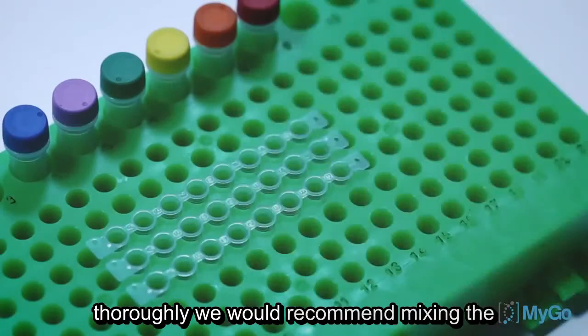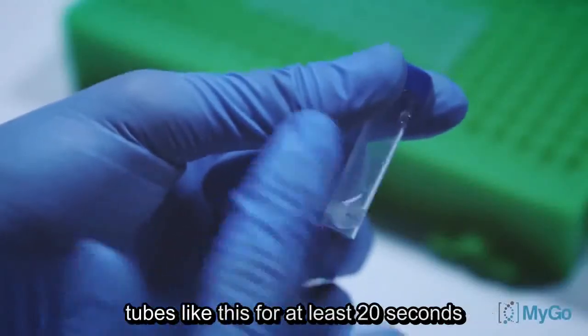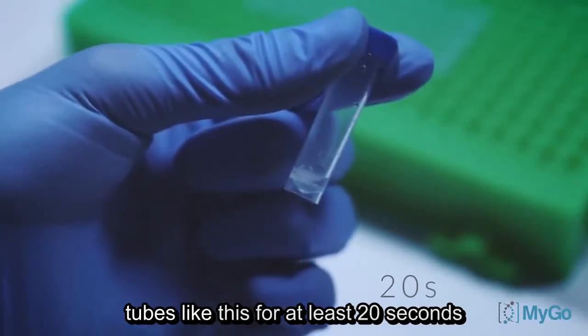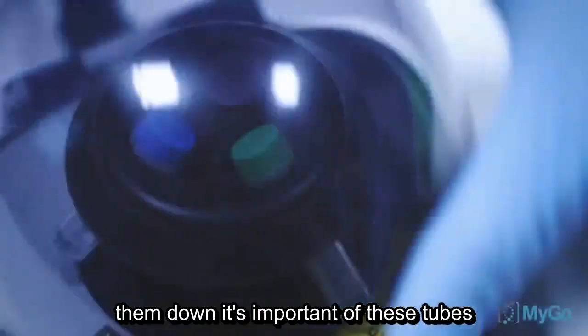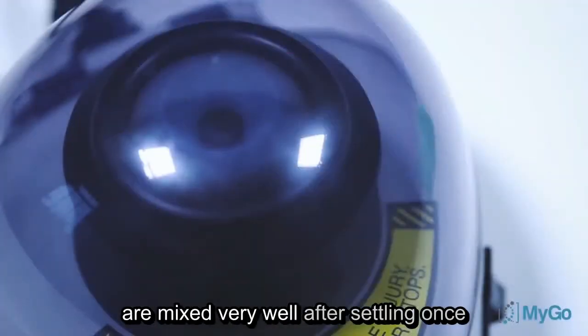Now we'll need to mix the tubes thoroughly. We would recommend mixing the tubes like this for at least 20 seconds, vortexing them, and then centrifuging them down. It's important that these tubes are mixed very well after settling.